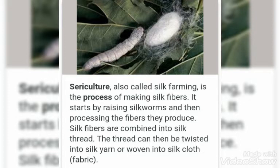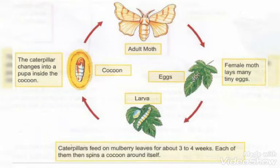Just like woolen yarn — maybe your grandmother, mother, or aunt has woolen yarn at home to weave sweaters for winter — similarly, silk fibers are twisted into silk yarn. We get this silk from the silkworm's cocoon. Here is the diagram that you need to understand and also draw in your EVS activity copy.